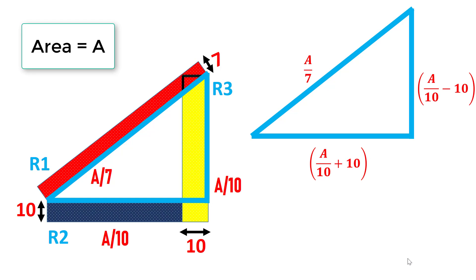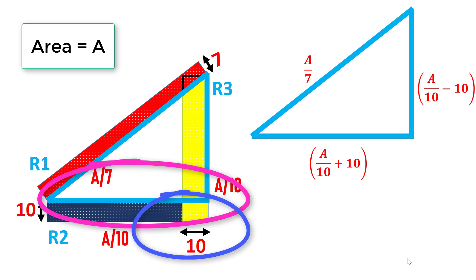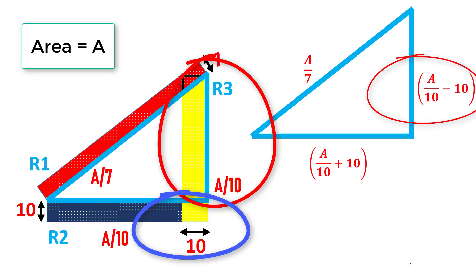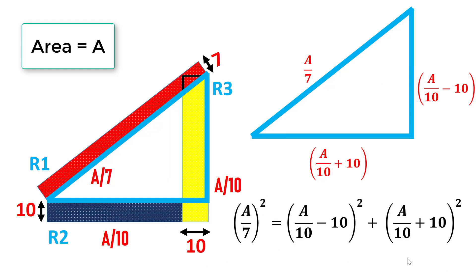In this triangle, the hypotenuse is A/7. The base of the triangle includes the sides of rectangles R2 and R3, so the base becomes A/10 plus 10. The height of the triangle includes the height of rectangle R3 but with the height of R2 subtracted, so the height becomes A/10 minus 10. Applying the Pythagorean theorem: (A/7)² equals (A/10 − 10)² plus (A/10 + 10)².